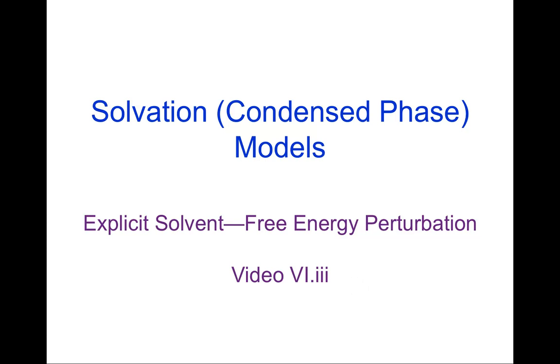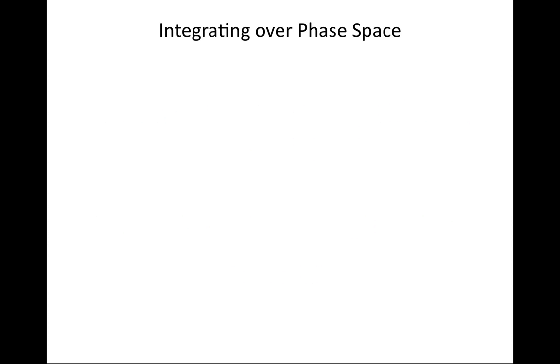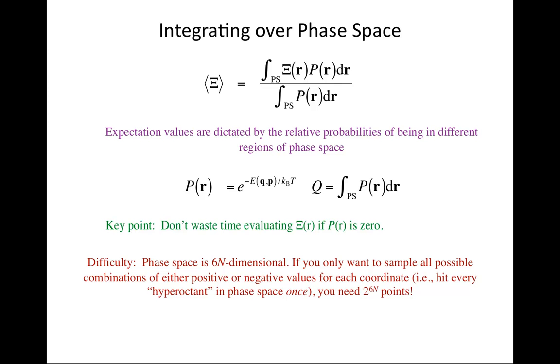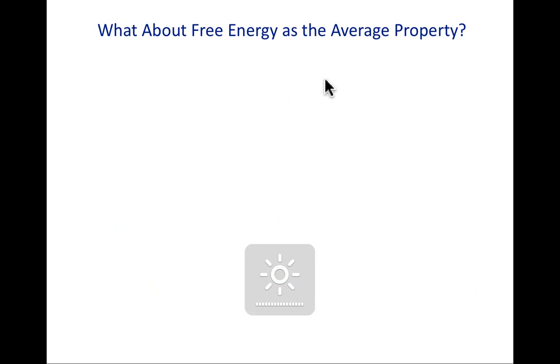Continuing with our examination of explicit solvation models, I want to take a look next at free energy perturbation techniques. I'm going to show a slide I've shown several times now, so I'm just going to put everything up here, that expectation values are given as integrals over phase space of properties weighted by probabilities. But what if the property you're interested in is actually free energy?